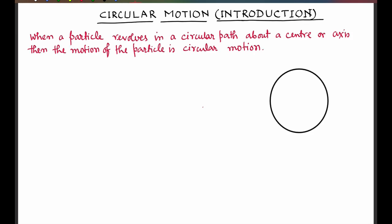What is circular motion? Whenever a particle revolves in a circular path about a center or an axis, the motion of the particle is known as circular motion.